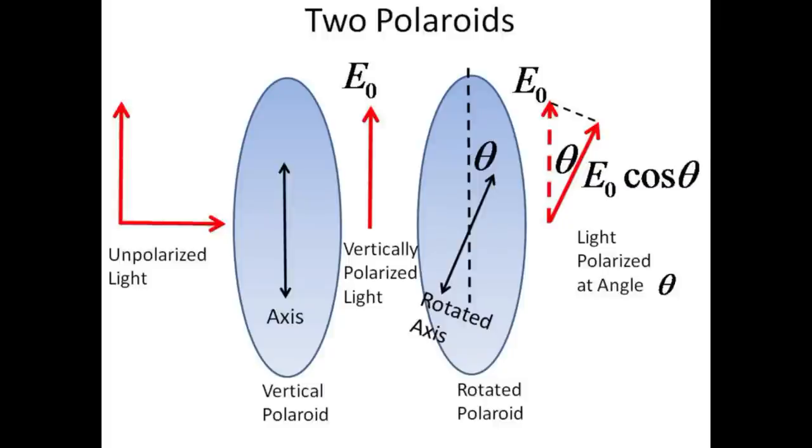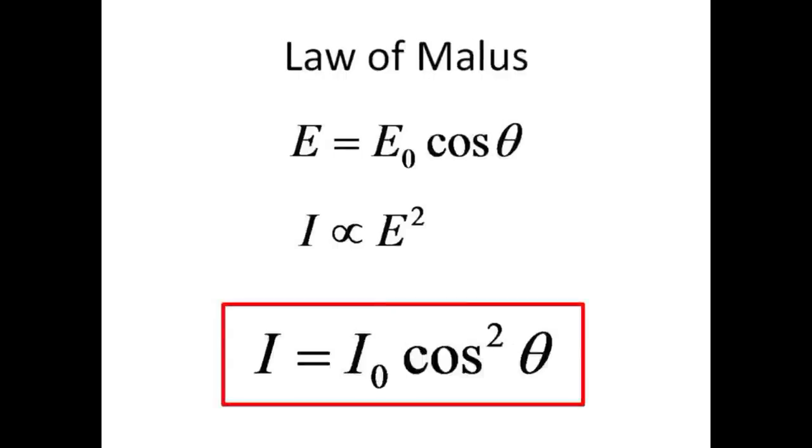When this vertically polarized light with amplitude E0 passes through a second polaroid with transmission axis tilted by theta degrees with respect to the first polaroid, only the component of the electric field along this new axis direction is transmitted. The amplitude of the electric field is thus reduced to E0 cosine theta. Since the intensity of the radiation depends on the square of the electric field amplitude, the intensity is reduced by a factor of cosine theta squared. This rule is called the law of malus.